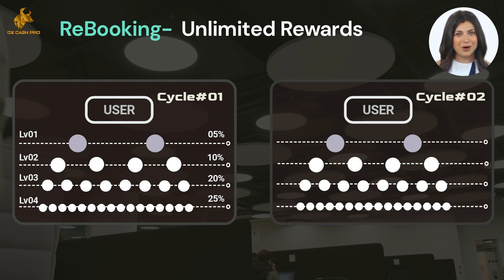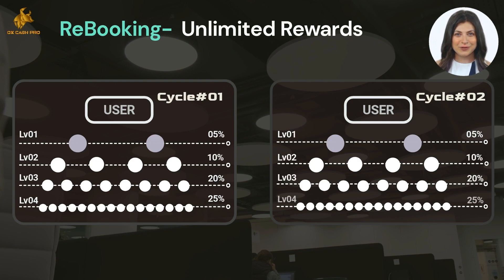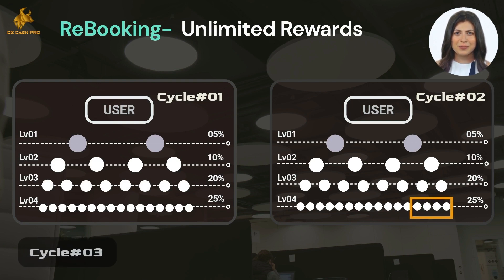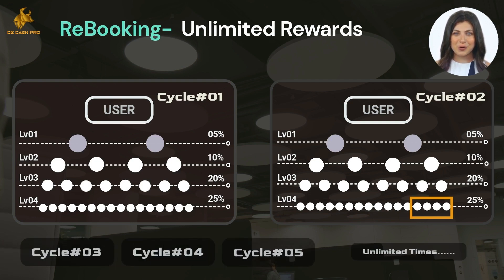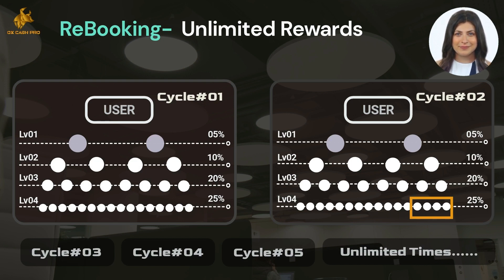In Cycle Two, you again receive level rewards and direct referrals from all four levels. Cycle Two completes by summing the 25% of the last four buyers in level four, and then Cycle Three is created automatically — no more investments required. In the same way, Cycle Four, Cycle Five, and so on are created unlimited times, so you receive these rewards for a lifetime.